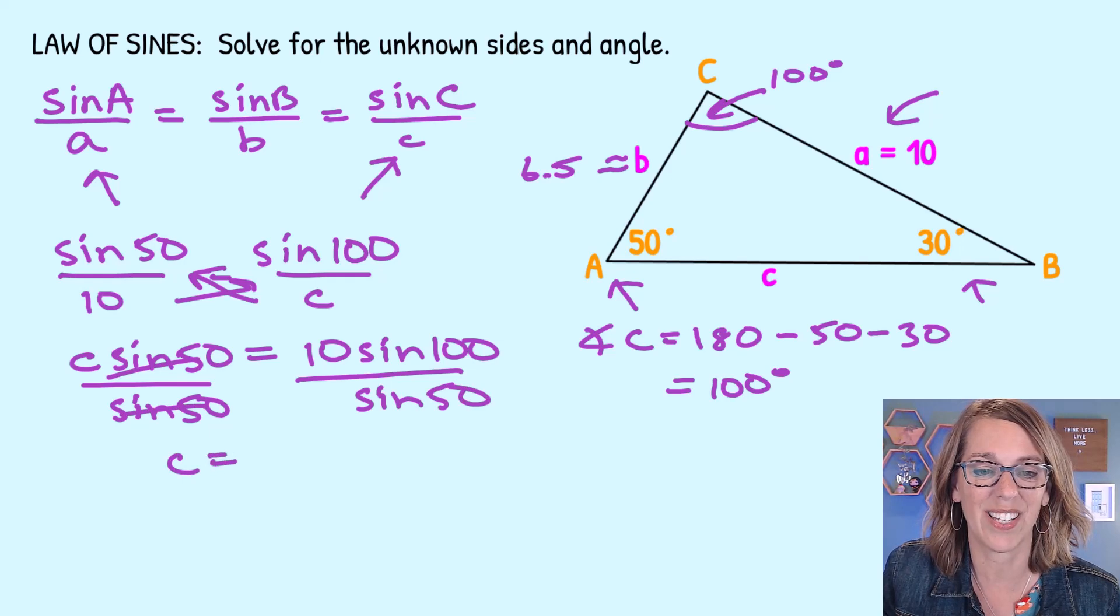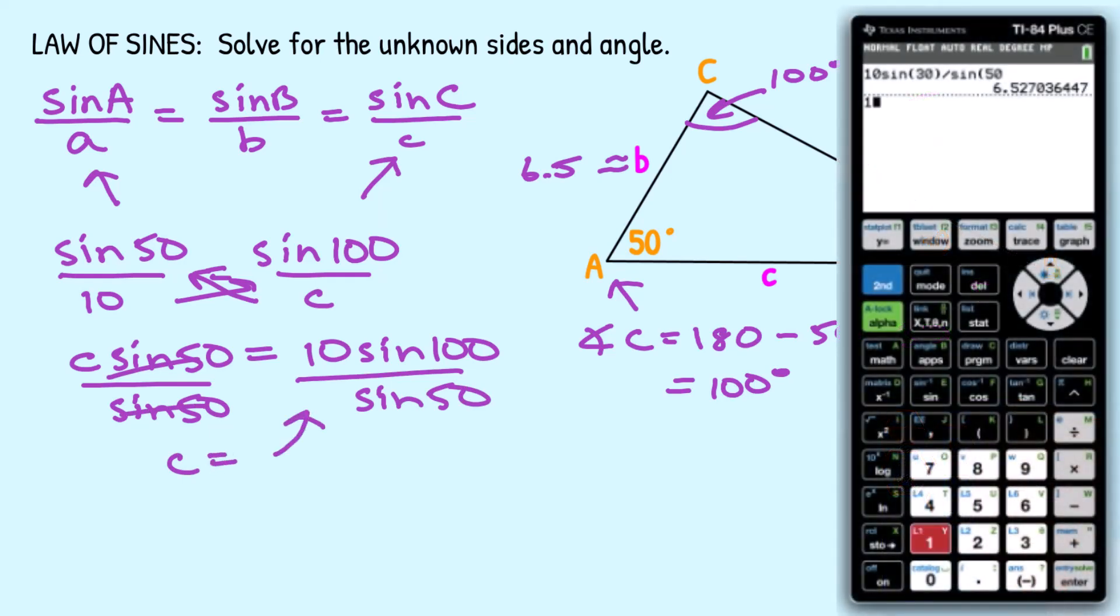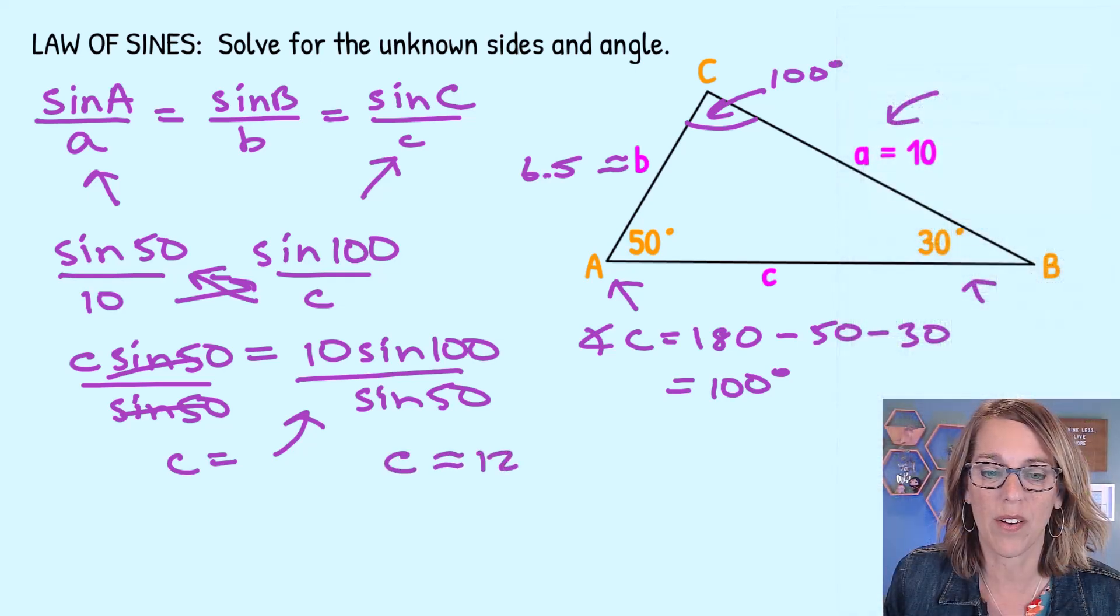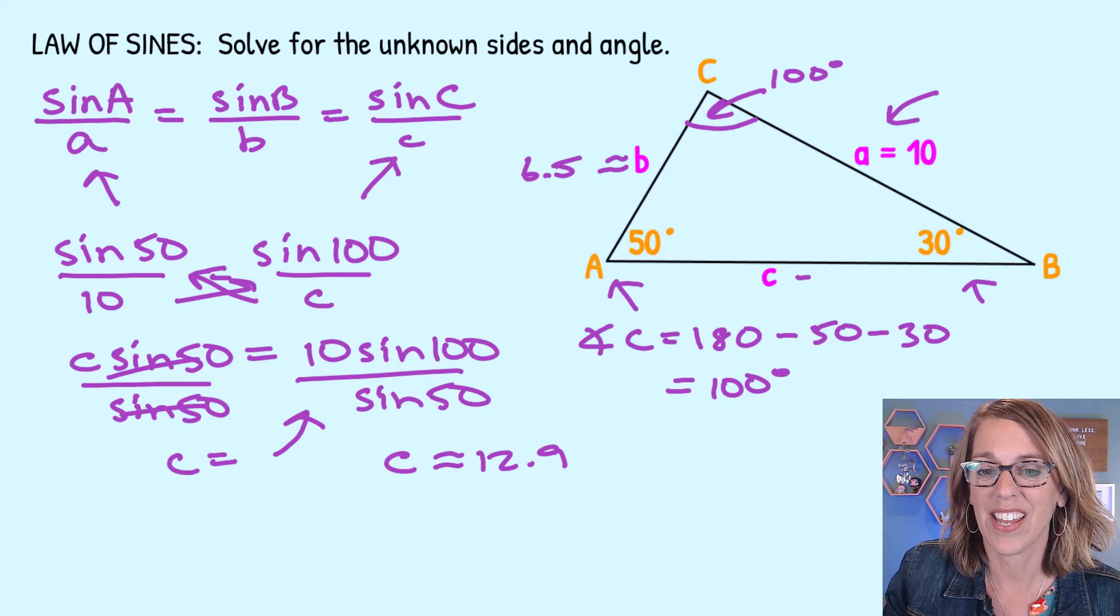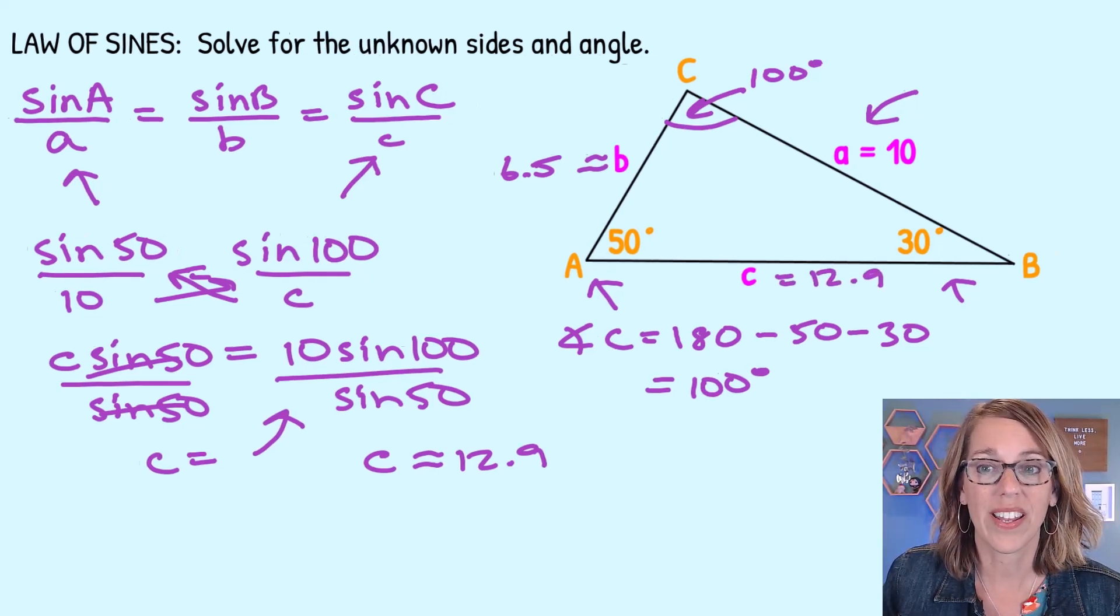And that's going to leave me with a calculation for C. Those cancel and C is equal to this right over into our calculator. So I've got 10 times the sine of 100 divided by the sine of 50. And I get 12.855. Let's call that about 12.9. So C is about 12.9.